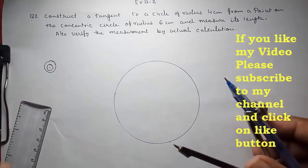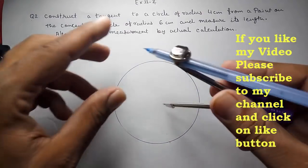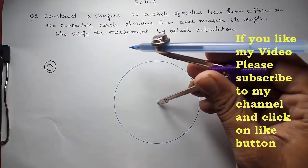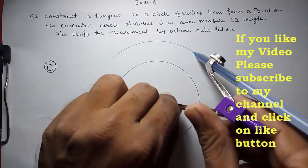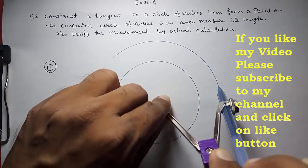It should be perfect because we want to measure the length also. Now we are going to draw another circle that is of 6 cm radius.